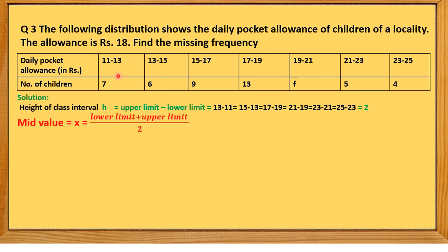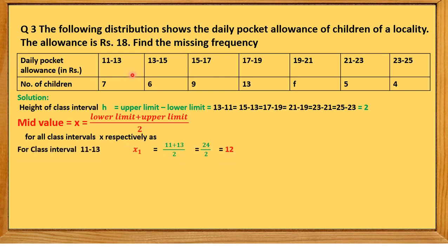We find the class mark using the formula: (lower limit + upper limit) / 2. For class interval 11–13, class mark x₁ = (11+13)/2 = 24/2 = 12. For class interval 13–15, class mark x₂ = (13+15)/2 = 28/2 = 14.